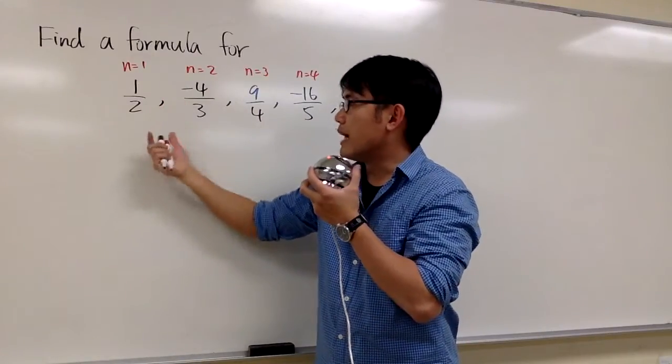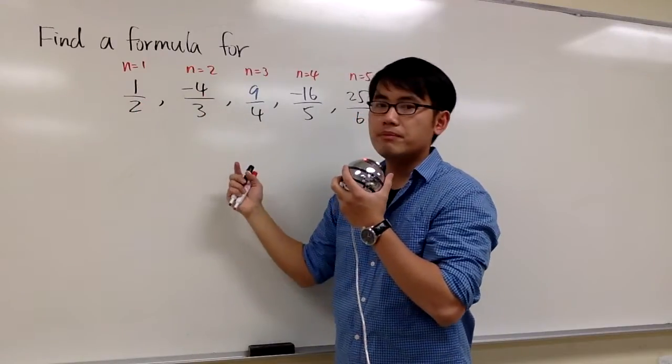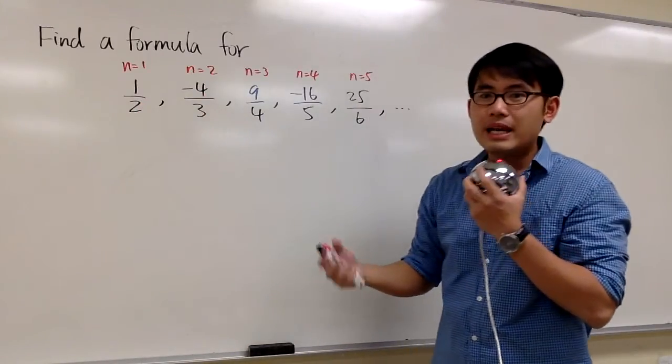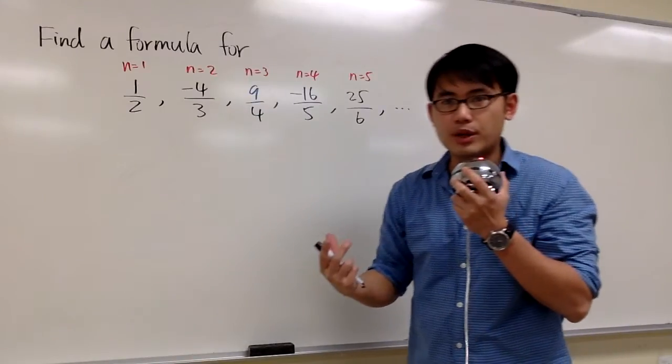Maybe multiply or add with 1/2 to get negative 4/3. It's kind of hard, right? But when we have fractions, this is also one of the things we can do.